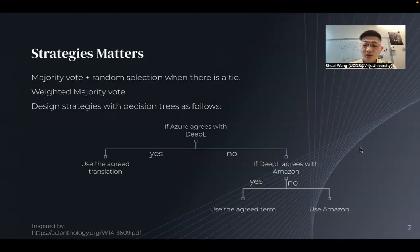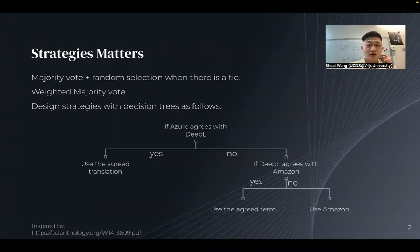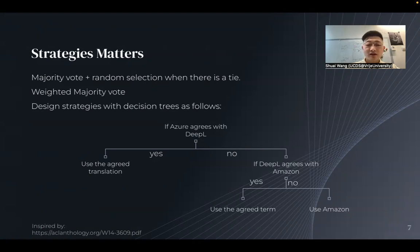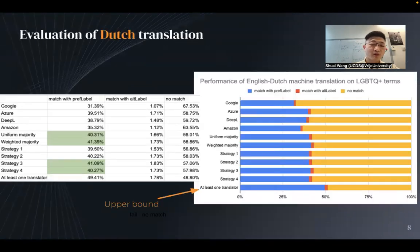When you have multiple machine translators, you can take advantage of their joint force. You can perform a majority vote, or a weighted majority vote where better-performing translators receive a higher weight. Inspired by related work, we also explored decision trees as strategies. The plot shows that Google performed worst, then Amazon, then Azure performed much better.